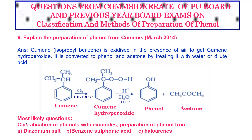Some more questions expected from the concept of classification and methods of preparation of phenol include: classification of phenols with examples, and preparation of phenol from diazonium salt, benzene sulfonic acid, and haloarenes — each as a separate two-mark question. Classification of phenols with examples will be a three-mark question, and give-reason questions from physical properties will be one mark each.